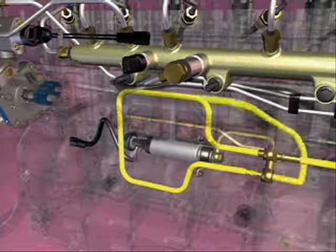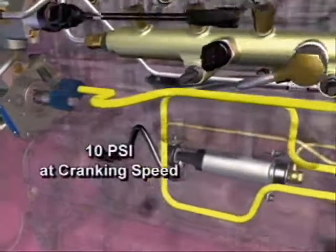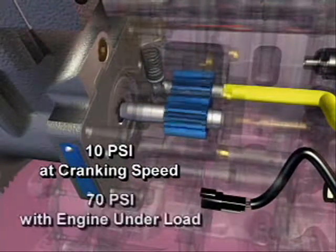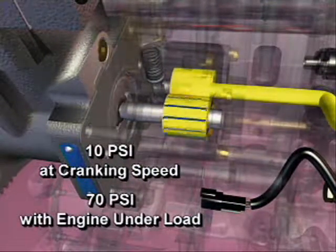Fuel enters the gear pump where it is pressurized to a minimum of 10 psi at cranking speed and 70 psi with the engine under load.